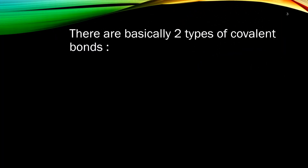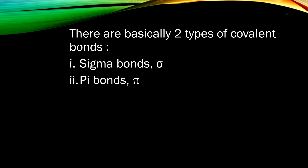Basically, there are two types of covalent bonds: sigma bonds and pi bonds. Next, we will have a look at the formation of both sigma and pi bonds.